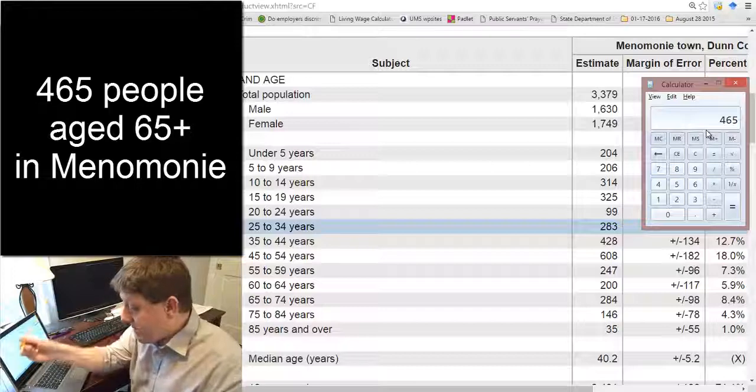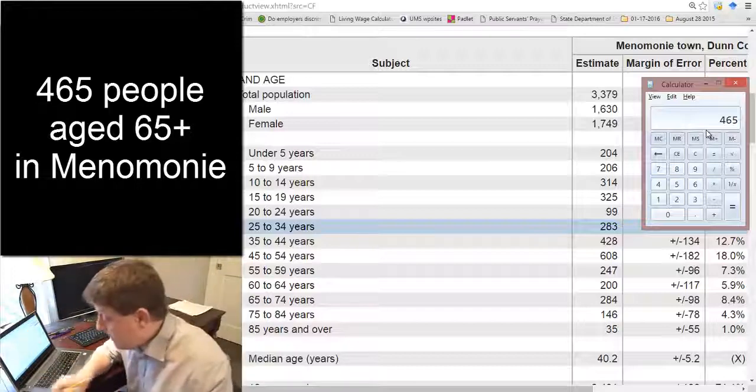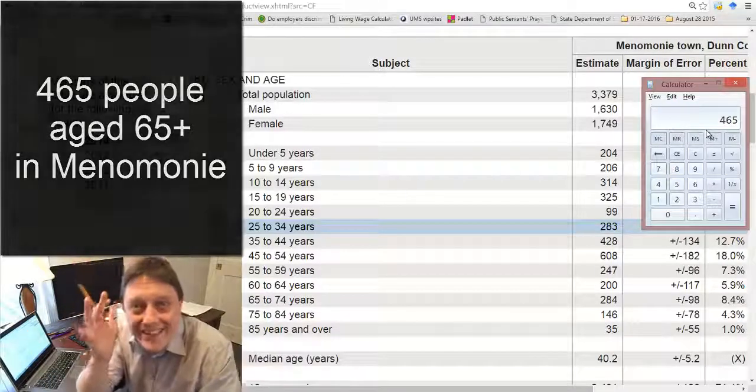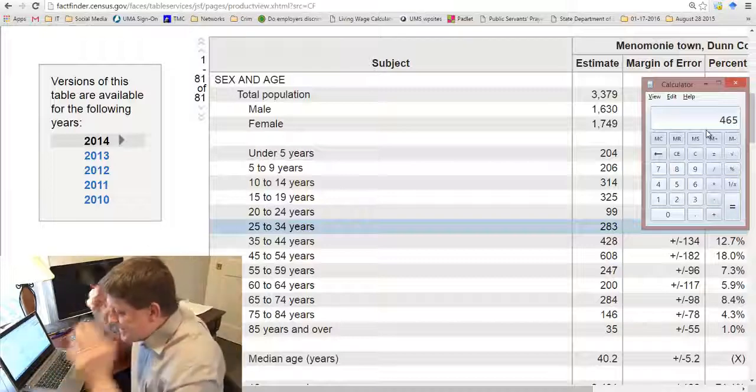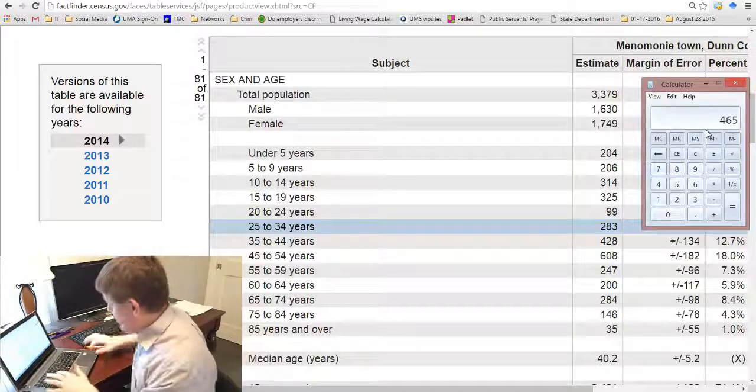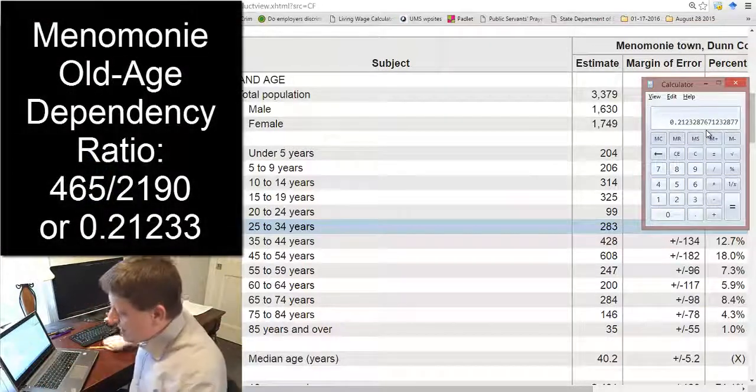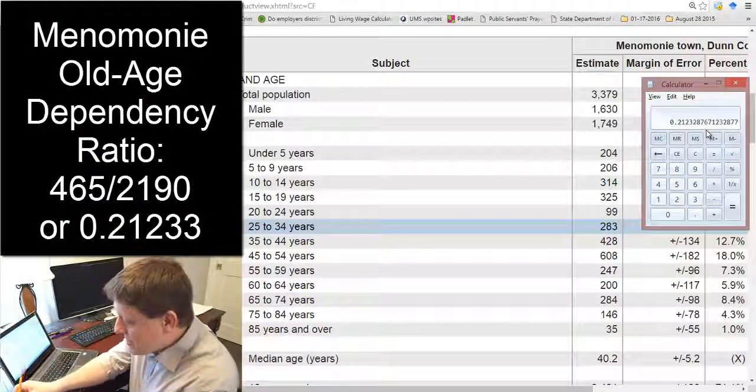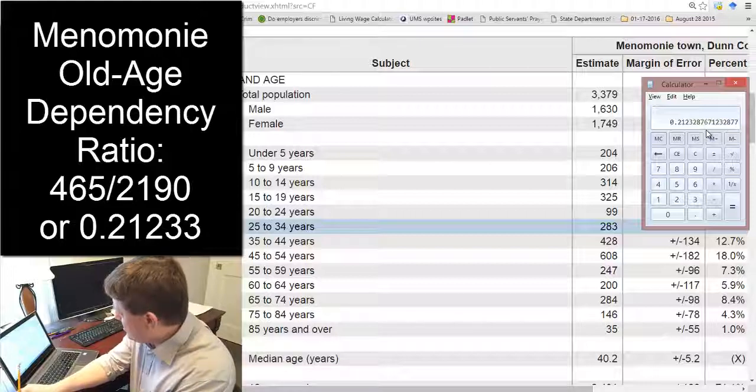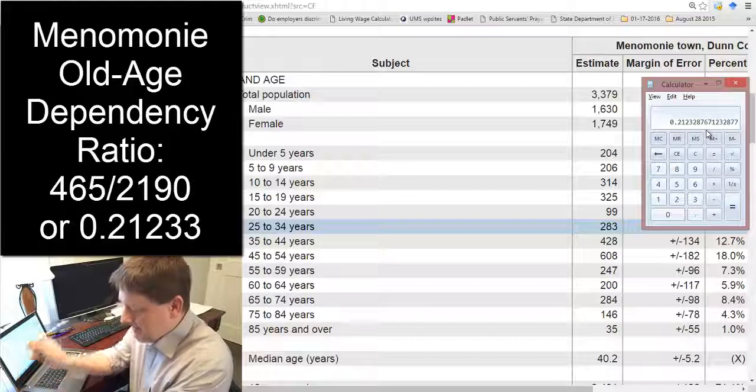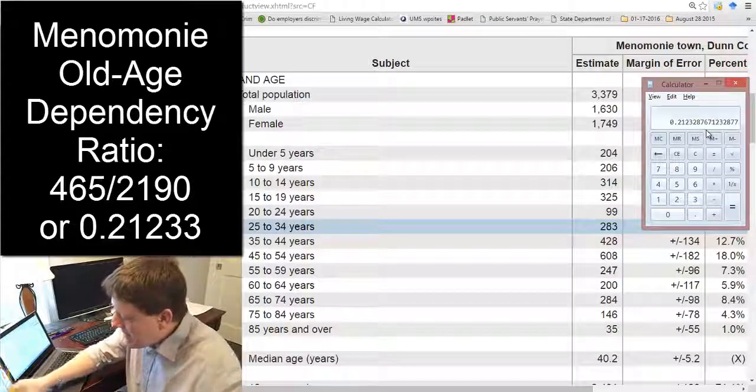And then we have to divide that by the number of people who are aged 15 to 64. Oh, we already know that. That's great. We already know it. It's 2,190 people. So we're going to divide that by 2,190. Superb. Okay. And that means our old age dependency ratio is 0.21233, rounding it a little bit. What does that mean?